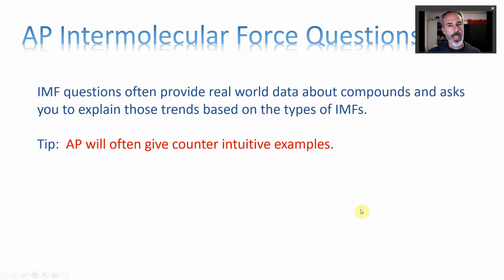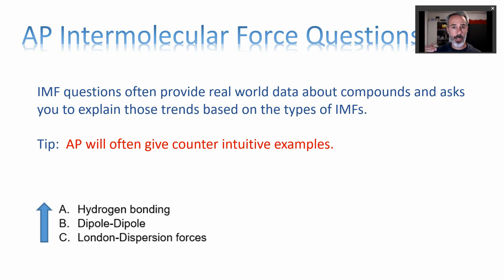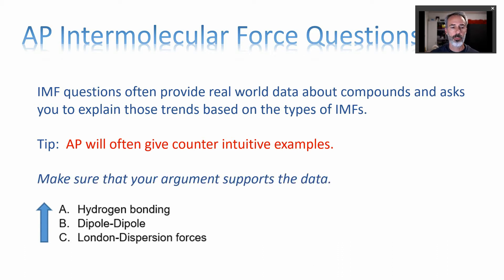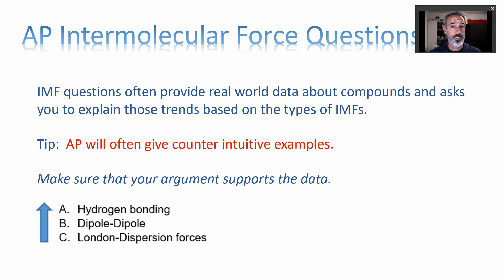Here's a second tip: AP will often give you counterintuitive examples. If you have this hierarchy where hydrogen bonding is the strongest intermolecular force and London dispersion forces is the weakest, you might conclude that if a compound has hydrogen bonding and the other doesn't, it will always have a higher boiling point — and that is just not true. So identify intermolecular forces, but don't ever contradict the data. We're going to wrap our arguments so that they fit the data.